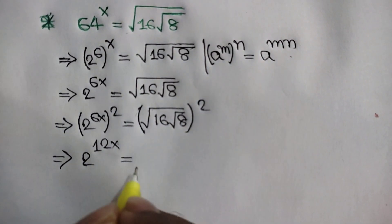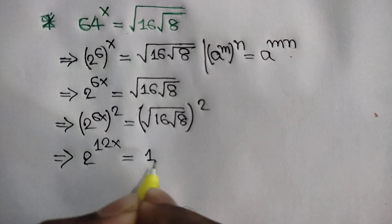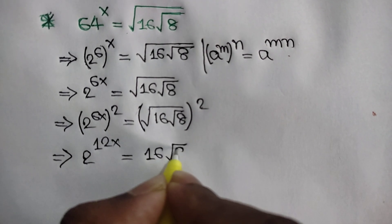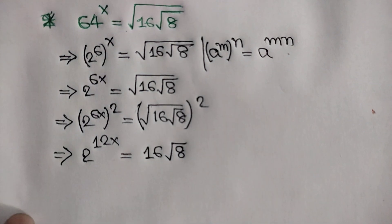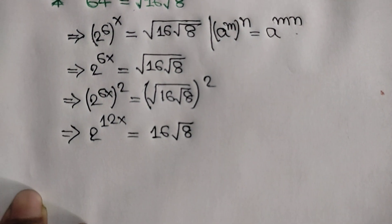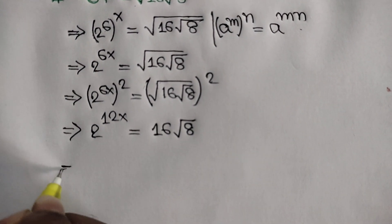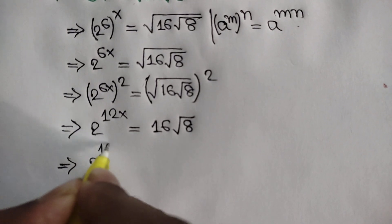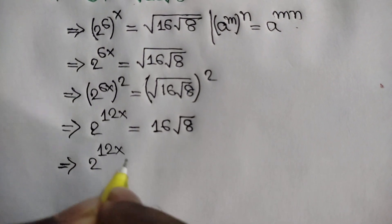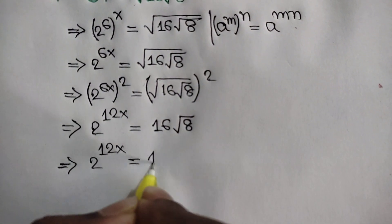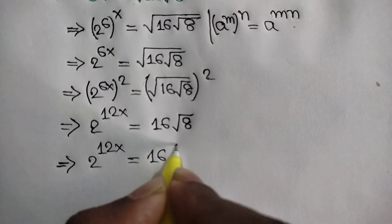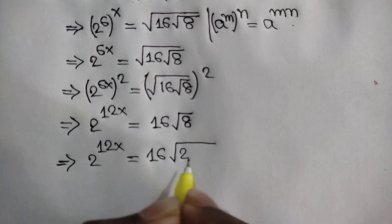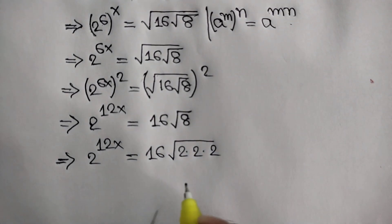The square cancels out the square root, so we get 16 times the square root of 8. Therefore, 2 to the power 12x is equal to 16 times the square root of 8, which means 2 times 2 times 2.